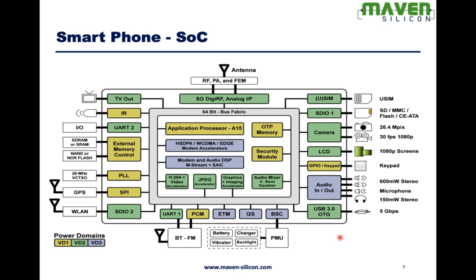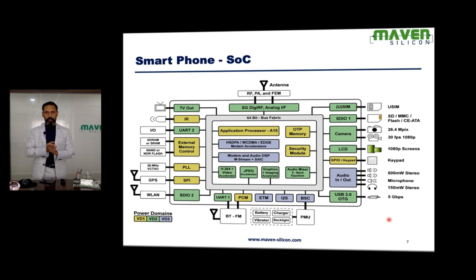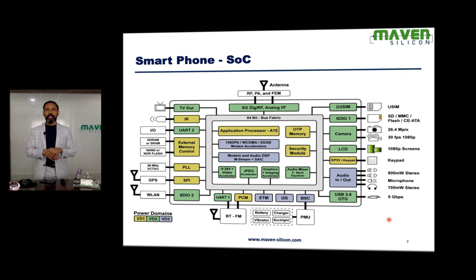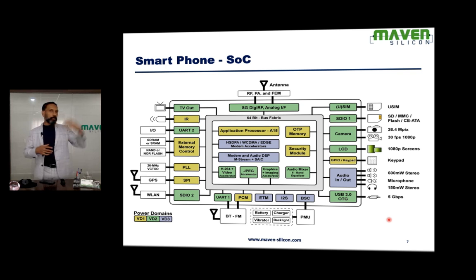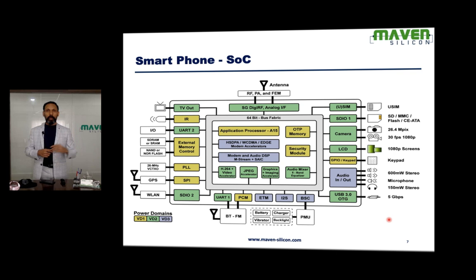Now let's look at how we take care of power consumption. While designing the chip, what we do is partition the chip into multiple voltage islands. We classify the IPs into high performance, medium performance, and low performance — depending on functionality and complexity. Most processors could be high performance IPs and most interface IPs could be low performance. We define different voltage levels for different IPs, using VD1 for high performance, VD2 for medium performance, and VD3 for low performance.